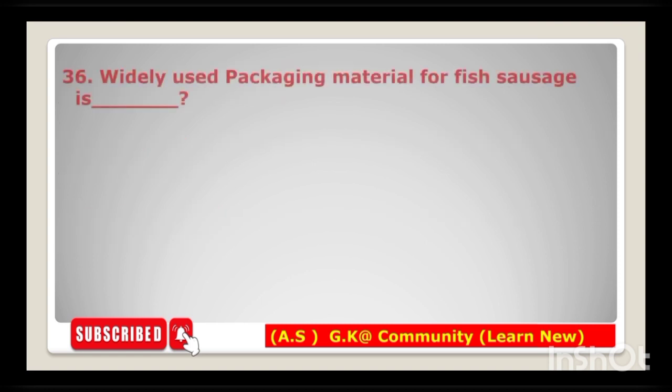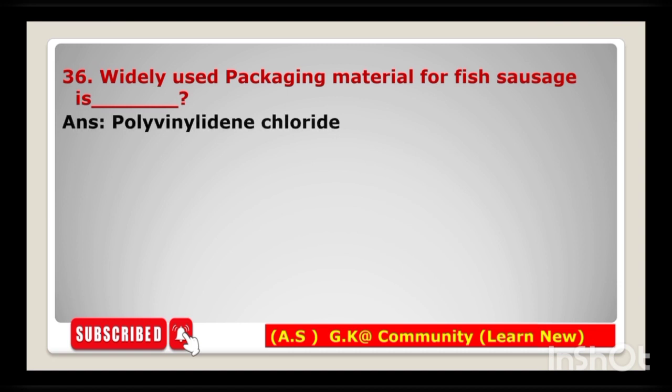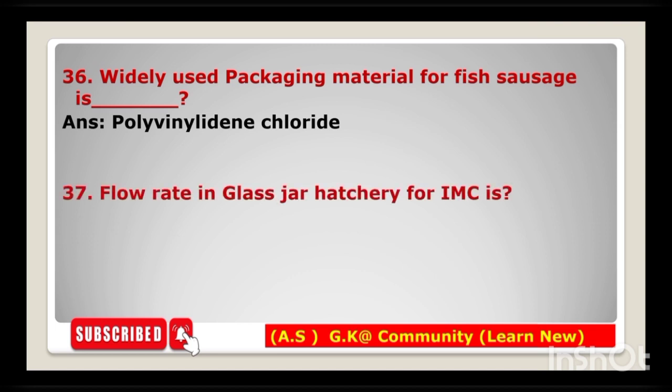Next question: widely used packaging material for fish sausage is — the answer is polyvinyl chloride (PVC). Next: the flow rate in a glass jar hatchery for Indian major carps is — the answer is 600 to 800 ml per minute.